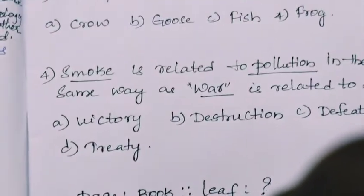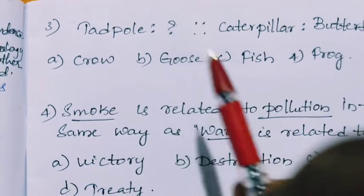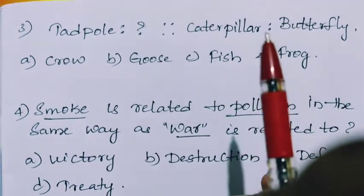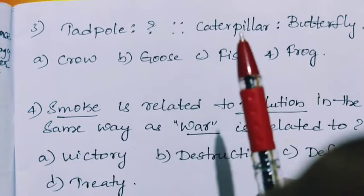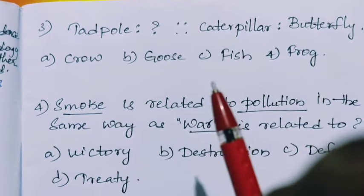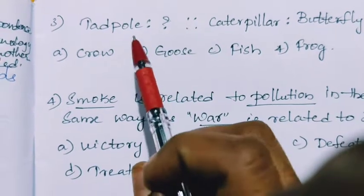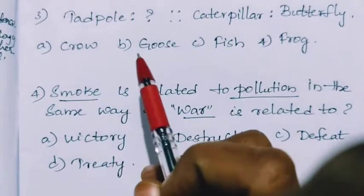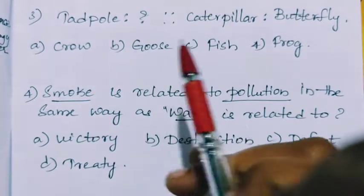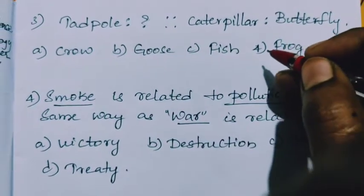Next question. Tadpole is to what? Caterpillar is to butterfly. So this is a young one, butterfly. Caterpillar is a young one or the larva of the butterfly, and we know that tadpole is the larva of frog. So from the given options, we have to choose crow, goose, fish, frog. So tadpole is the larval stage of the frog.